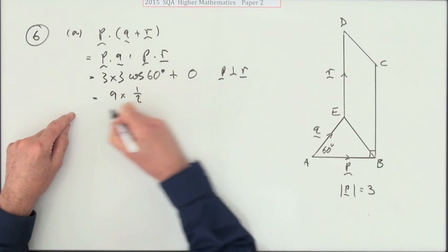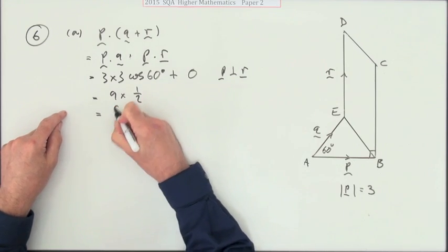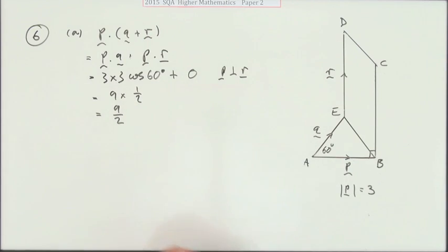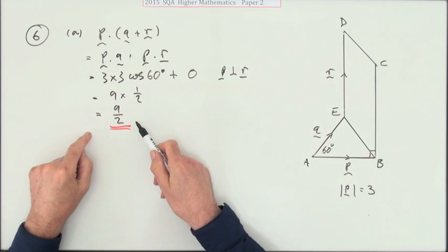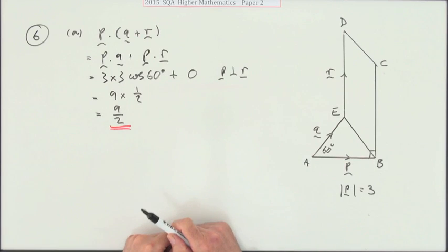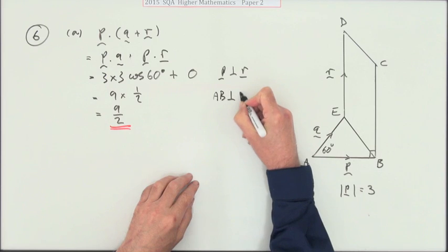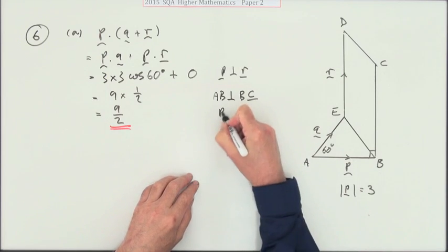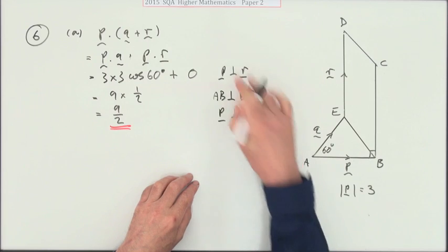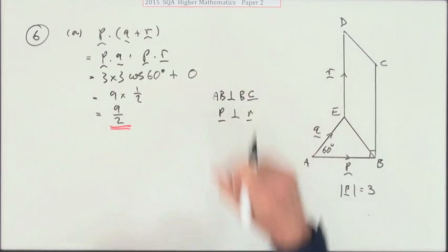Now I don't know if you need to make a statement for that—that p is perpendicular to r. So that then just comes to 9 times the cosine of 60, which is a half, so that means the whole thing comes to 9 upon 2, or 4 and a half. Now there's three marks for this, so maybe you do have to justify that that's zero by saying something like AB is perpendicular to BC, which means that p is perpendicular to r.